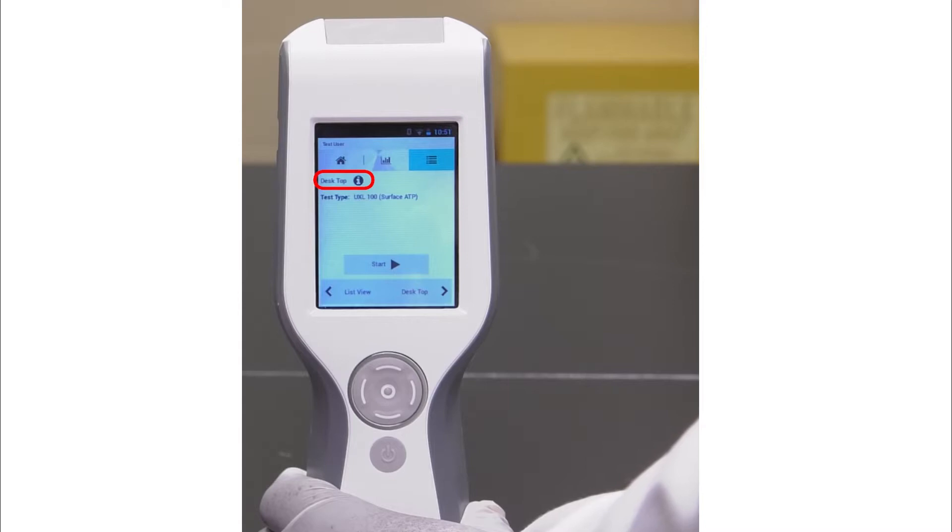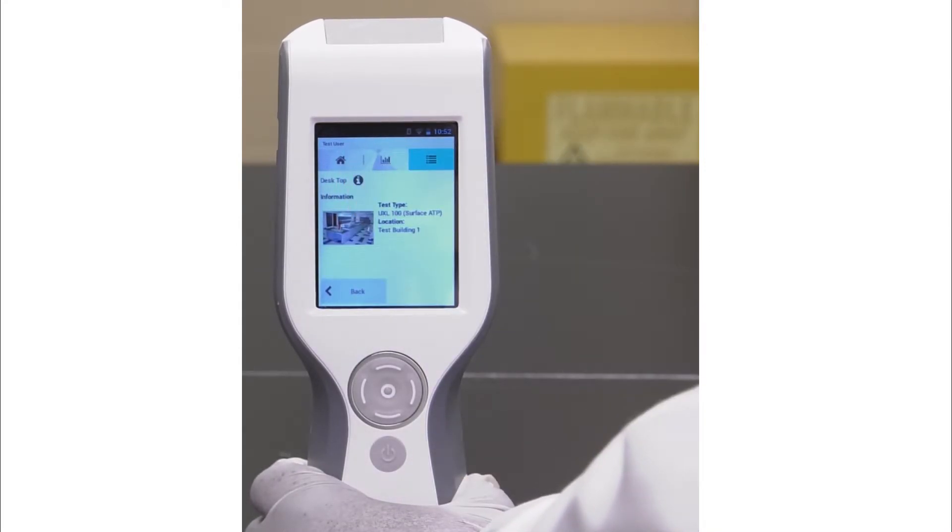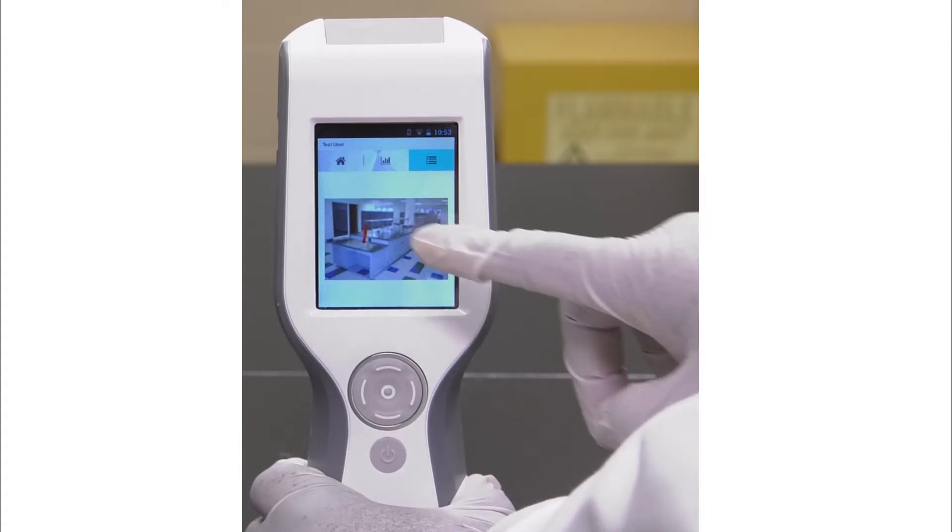The test location and test type are displayed on the next screen. You may press on the eye icon to get test point details. You will see a more detailed description of the test point, including full location hierarchy, test types, and picture of the sampling area if one has been uploaded. Tap the picture to make it larger. Tap it again to minimize it.